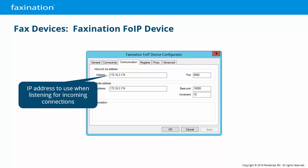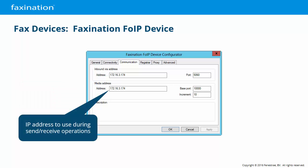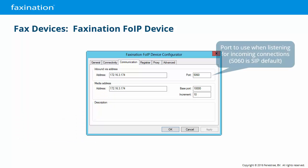For the FaxNation fax over IP device, the Inbound Via Address is the IP address to use when listening for incoming connections — needed when you have multiple network cards or multiple IP bindings. By default, this field is empty and the standard IP address of the server is used automatically. Media address is the IP address to use for the actual T.38 data as defined in the initial SIP signaling. Port is where FaxNation will listen for new connections — the FaxNation FOIP device is SIP only, and the default SIP port is 5060.